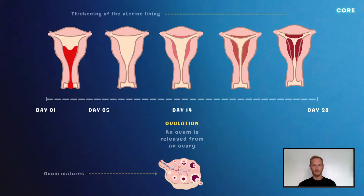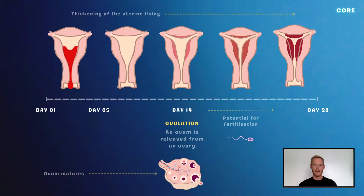In preparation for the possibility that the ovum is fertilised, the lining of the uterus thickens. This ensures that if fertilisation does occur, the embryo that develops can successfully implant or embed itself into the uterine wall. If no sperm cells reach the egg and fertilisation does not occur, the lining of the uterus breaks down and the cells, along with blood, are expelled through the vagina. This is known as menstruation or a menstrual period.